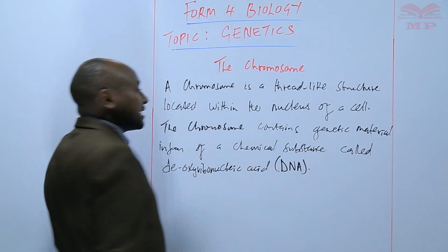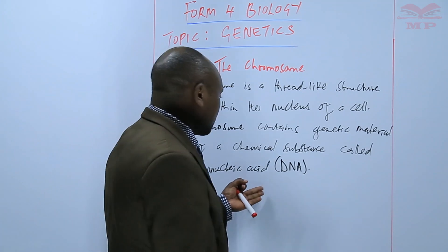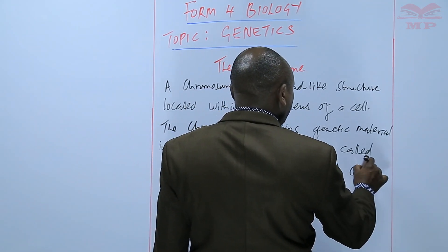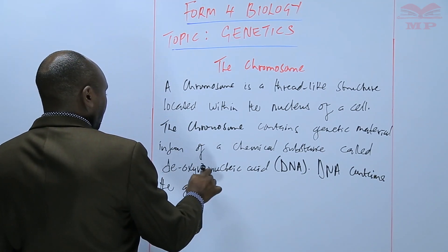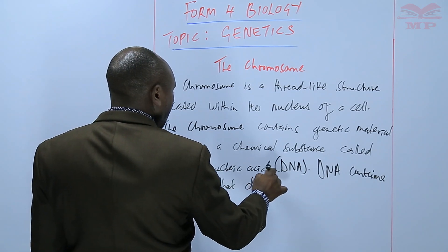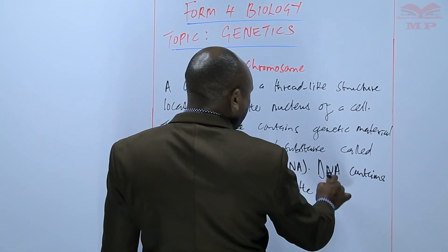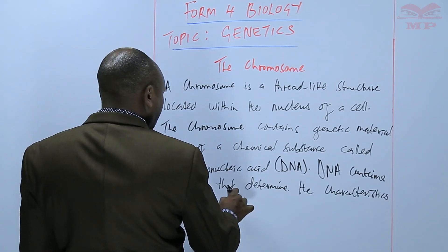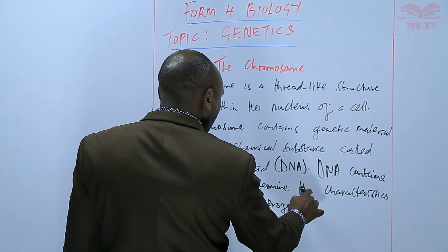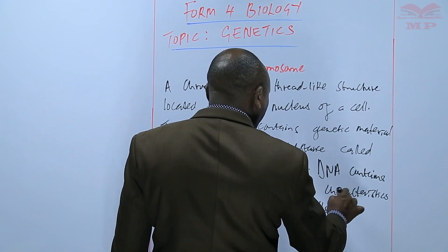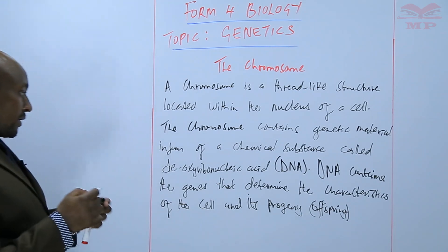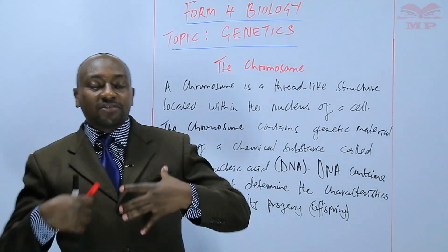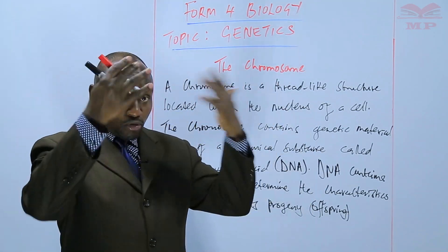That chemical substance is the genetic material. This genetic material, which is the DNA, is the one that contains the genes. DNA contains the genes that determine the characteristics of the cell and its progeny, its offspring, and its generations. Those genes determine the characteristics of every cell in our bodies, which determine the characteristics that we have overall.